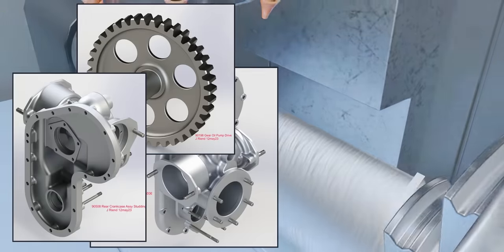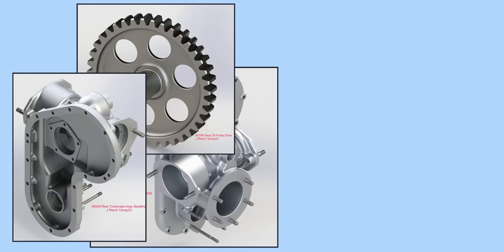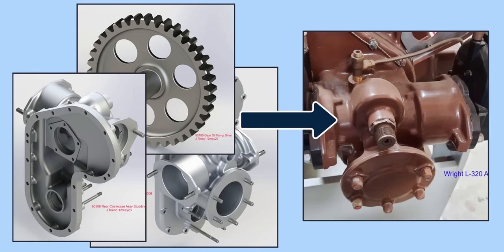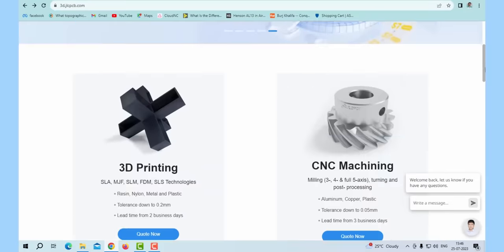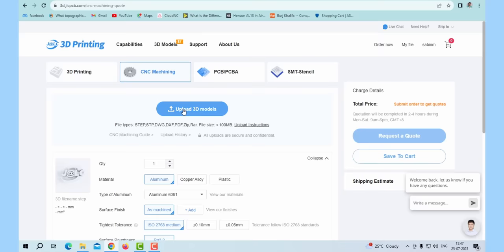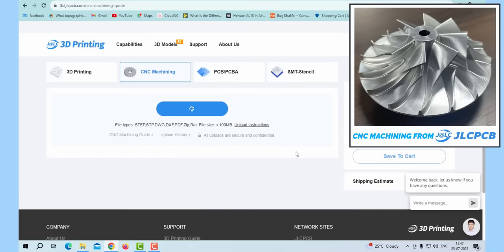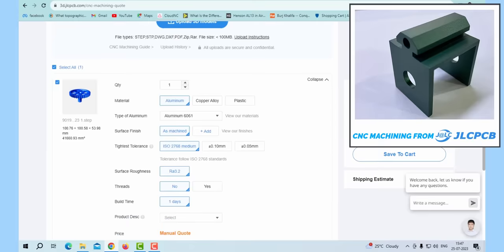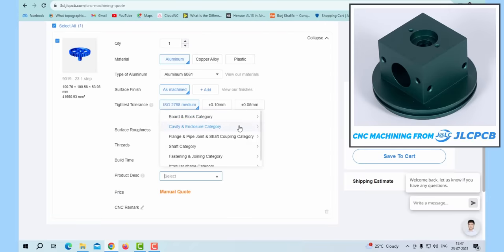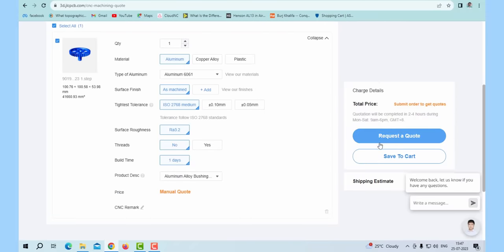If you have CAD models with you, just by placing an order on the JLCPCB website, you'll be able to convert the CAD models to reality. Look at this example to understand how easily you can upload your CAD file and select the material you want and other parameters. They have worldwide shipping, and within a few working days, you'll receive the final product.